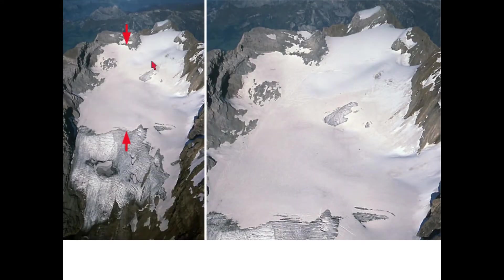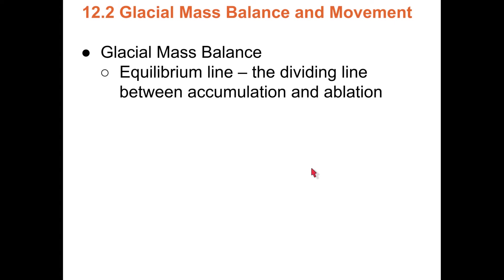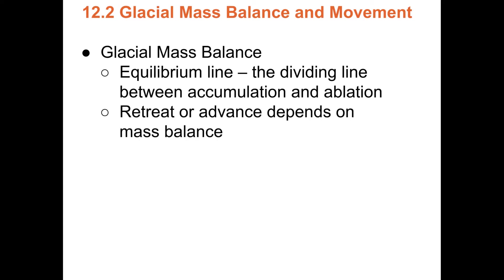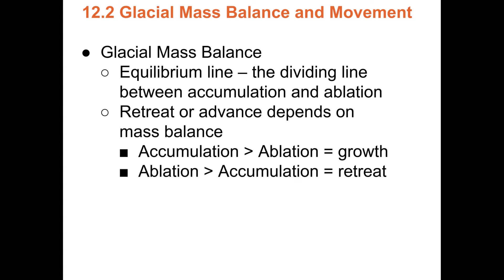Here you can see the snow-covered accumulation zone and the equilibrium line. The bottom part is just ice — the ablation zone with negative mass balance. Retreat or advance depends on mass balance. If accumulation exceeds ablation, you have glacial growth. If ablation exceeds accumulation, there's glacial retreat.